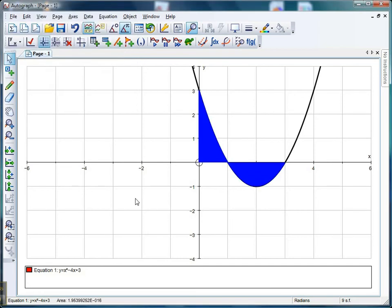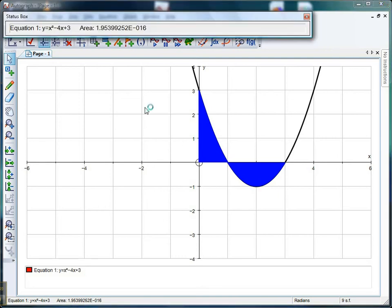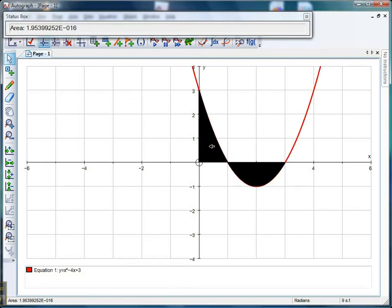And there's my area there. If you want a reading of that, just give the status bar a little double click on the bottom and make sure your area is selected. You'll see that the area is 1.95 times 10 to the power of minus 16, so it's pretty much 0, which is what your students will get.